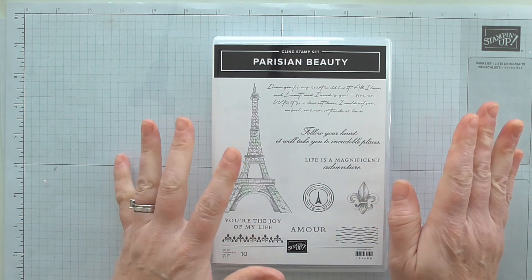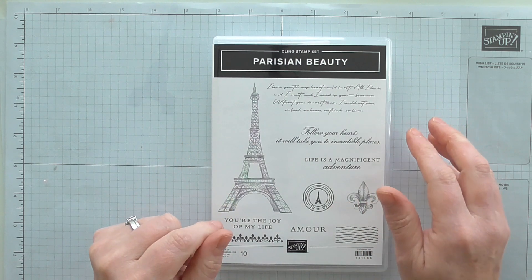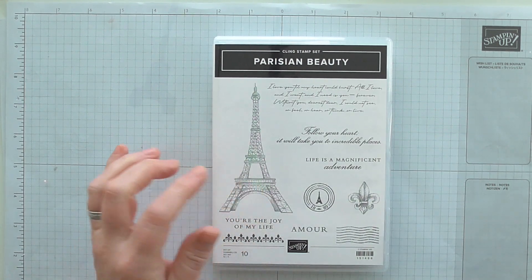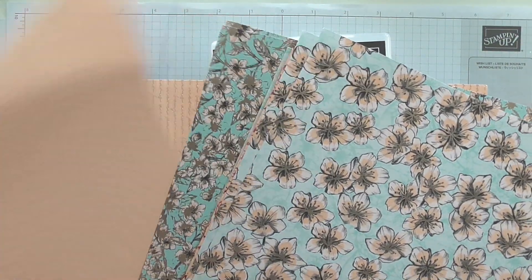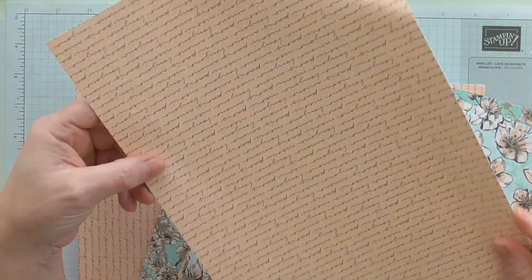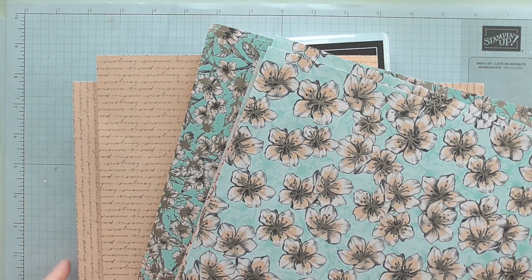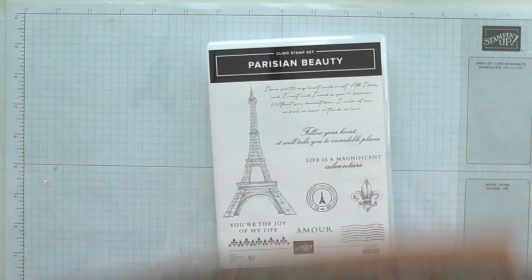I'm absolutely in love with anything Parisian, anything that looks a little bit shabby chic or vintage. I'm going to be using some of the paper from the same suite. It's absolutely beautiful and I'm using this one which is a script and it's foiled. It's absolutely beautiful purple, so this is all available from January the 3rd.